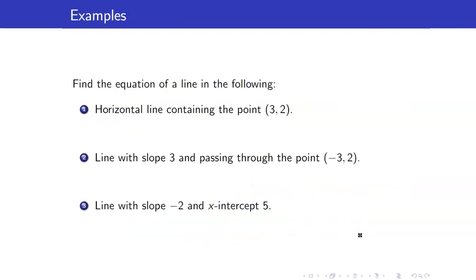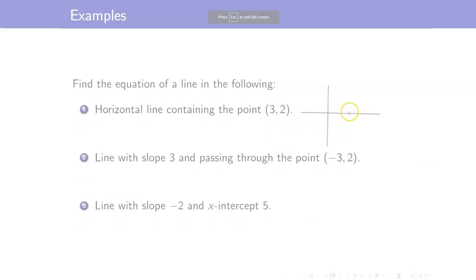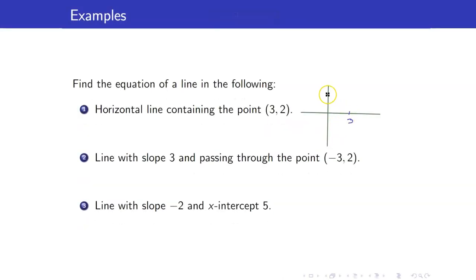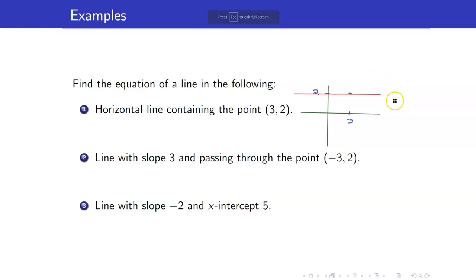Let us have some more examples. Let us find the equation of a line in the following cases. First, a horizontal line containing the point (3, 2). Let's imagine our line — it's a horizontal line passing through (3, 2). What is the equation? The y-coordinates are always equal to 2, so hence it's y equals 2.